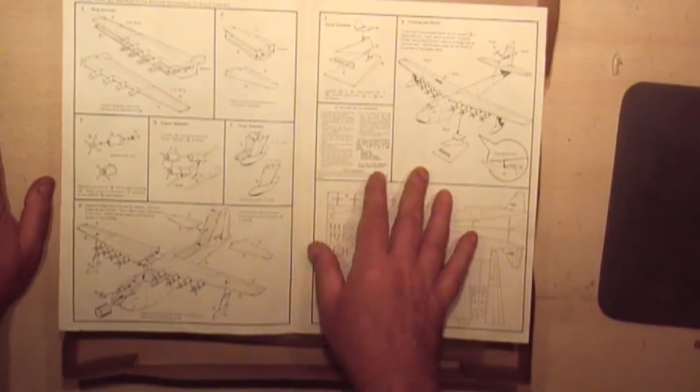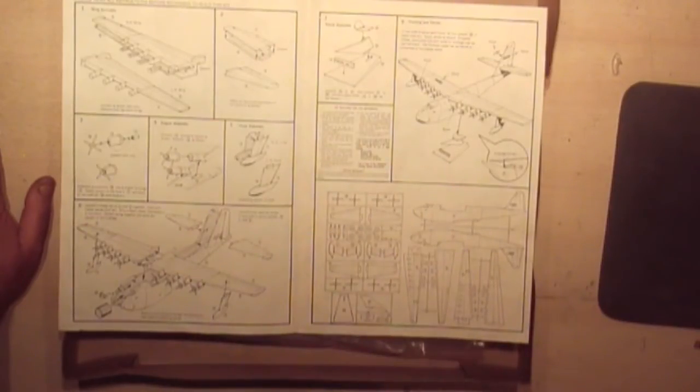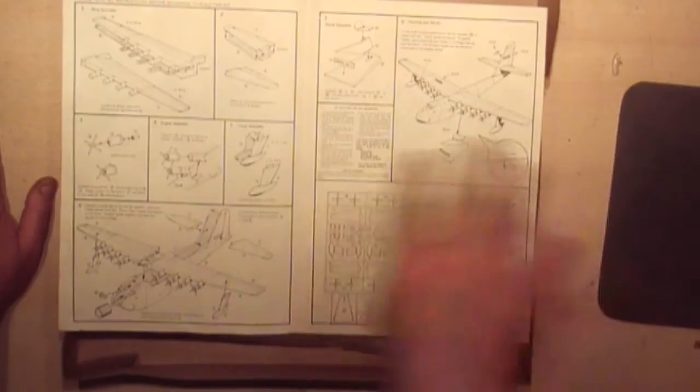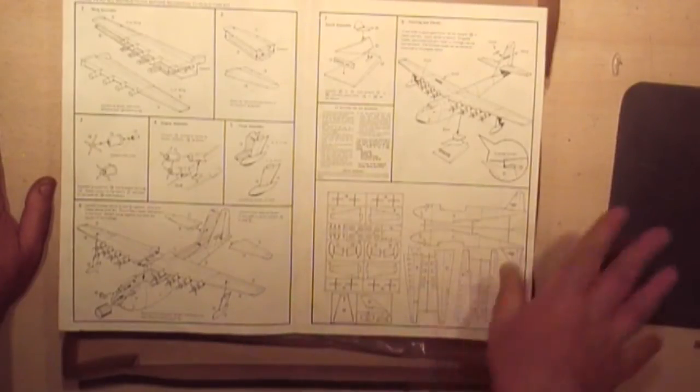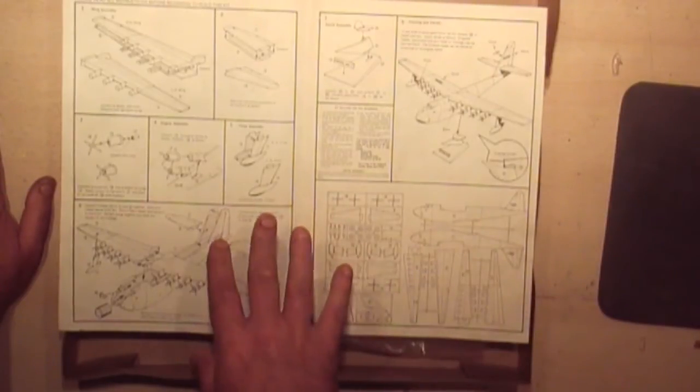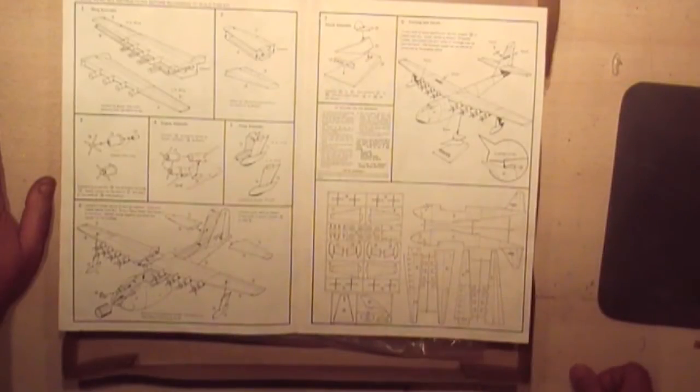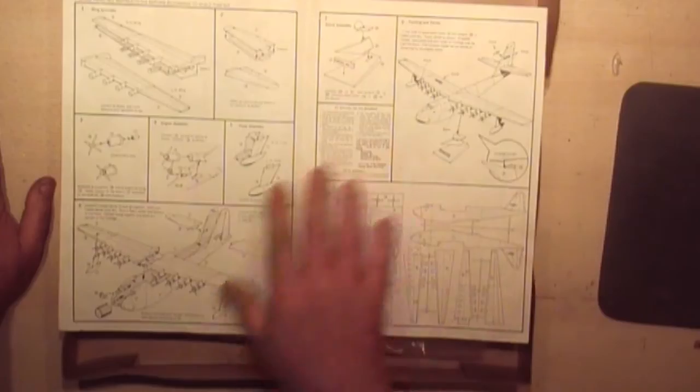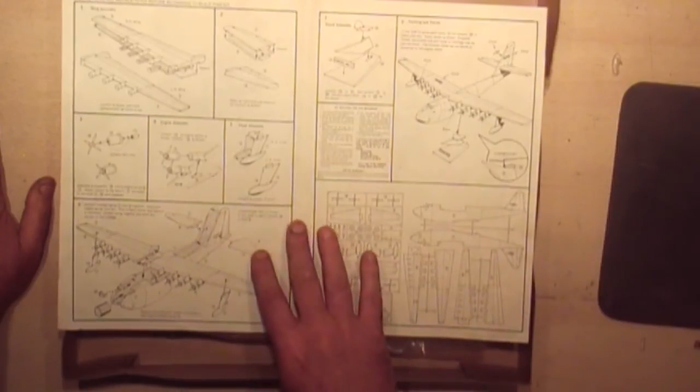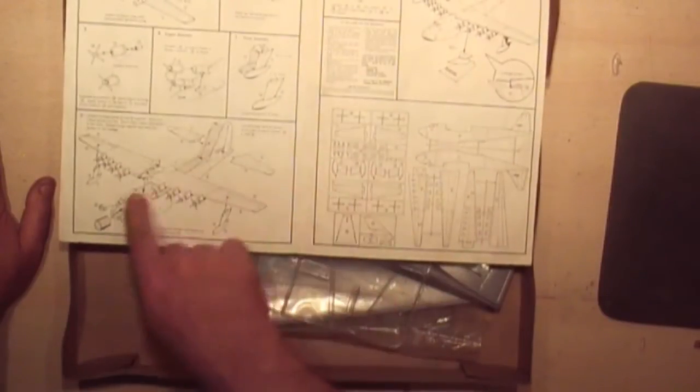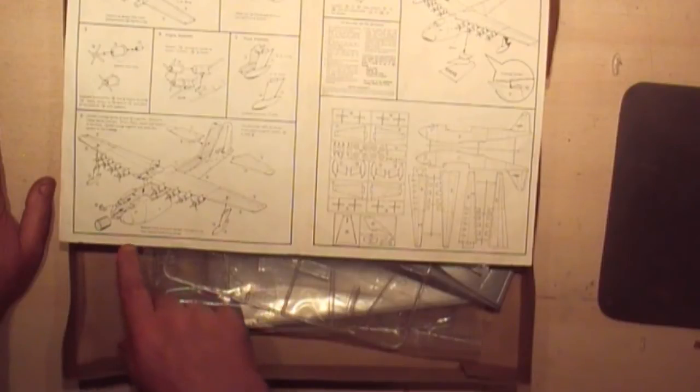The instructions have a brief history and how much it cost and what the power units are and all that sort of thing on the front. The instructions are in eight sections of the build. Basically what it is, you put all the halves together one day and then you can balance it and put all parts together and spray and make it finished.